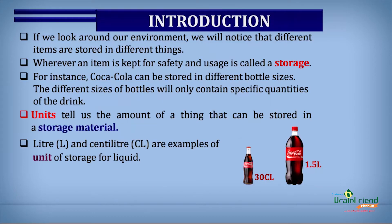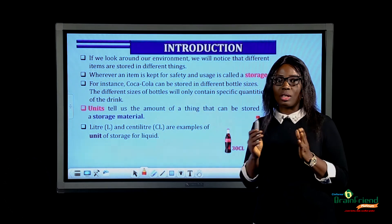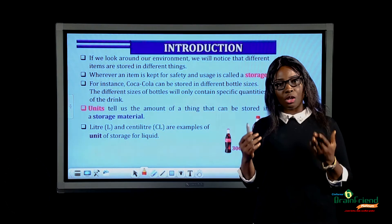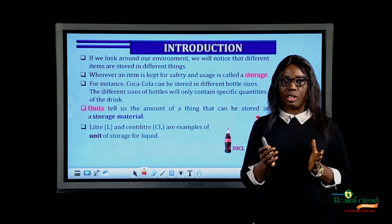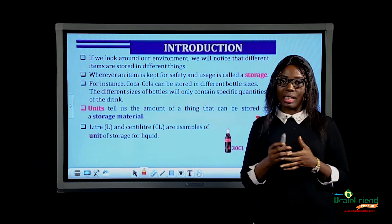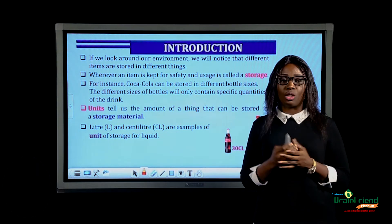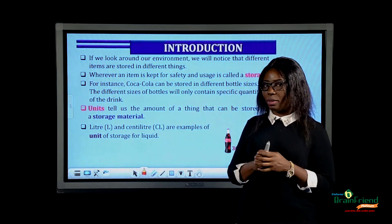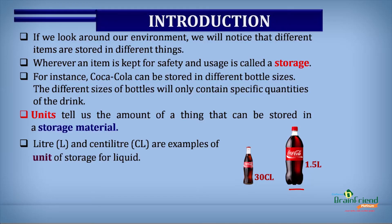Now take a look at your environment. I'm sure you can see certain items kept in a place where it is safe and where it will be easy to collect them for use. Wherever an item is kept for safety and future use is called storage. So your bag holds your books — it can be considered as storage. But I have two good examples here: two bottles of coke.